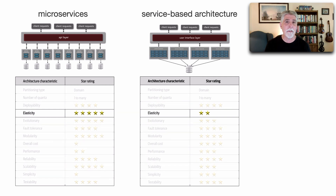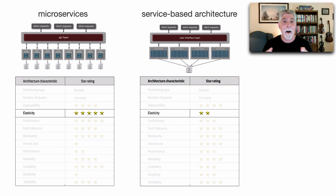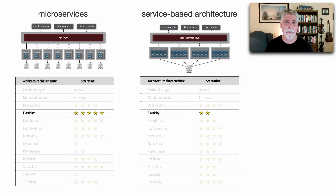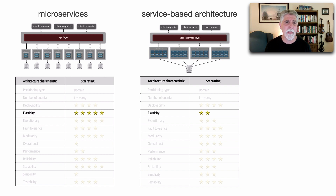Looking at our first difference, there's a significant difference in elasticity — where we have a sudden spike in user load, such as a concert ticketing system or an auction bidding system near the end. With microservices this is rated five stars because of the fine-grained nature of the services. However, with service-based architecture we have more coarse-grained services, and this relates to a metric called MTTS — mean time to start — meaning how long it takes a new service instance to start up. In microservices, startup times are in the hundreds of milliseconds, whereas in service-based it's typically measured in seconds.